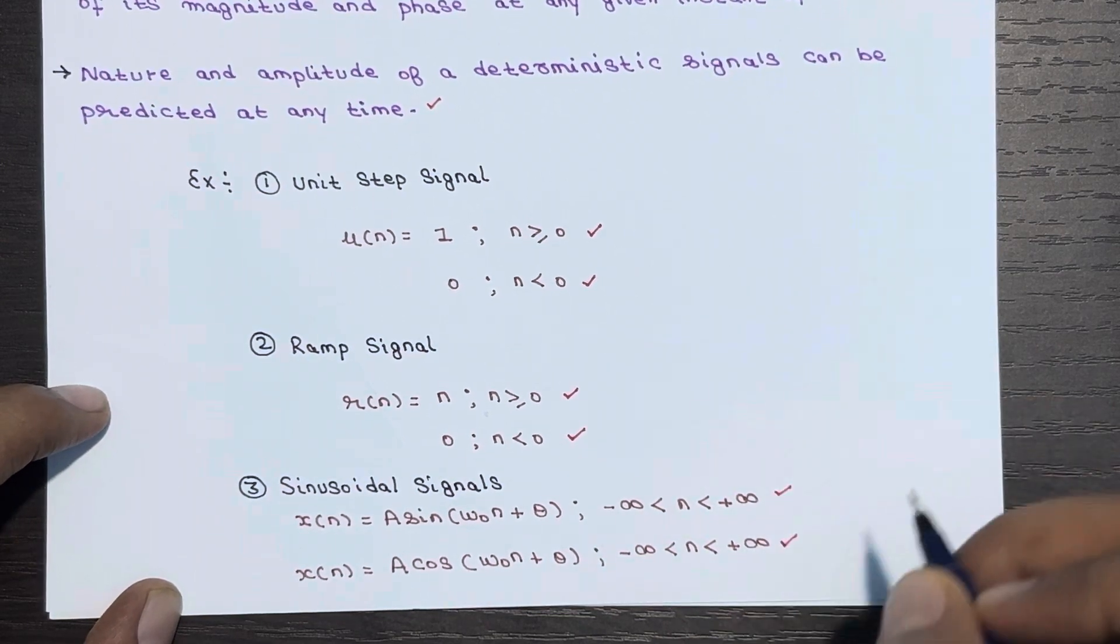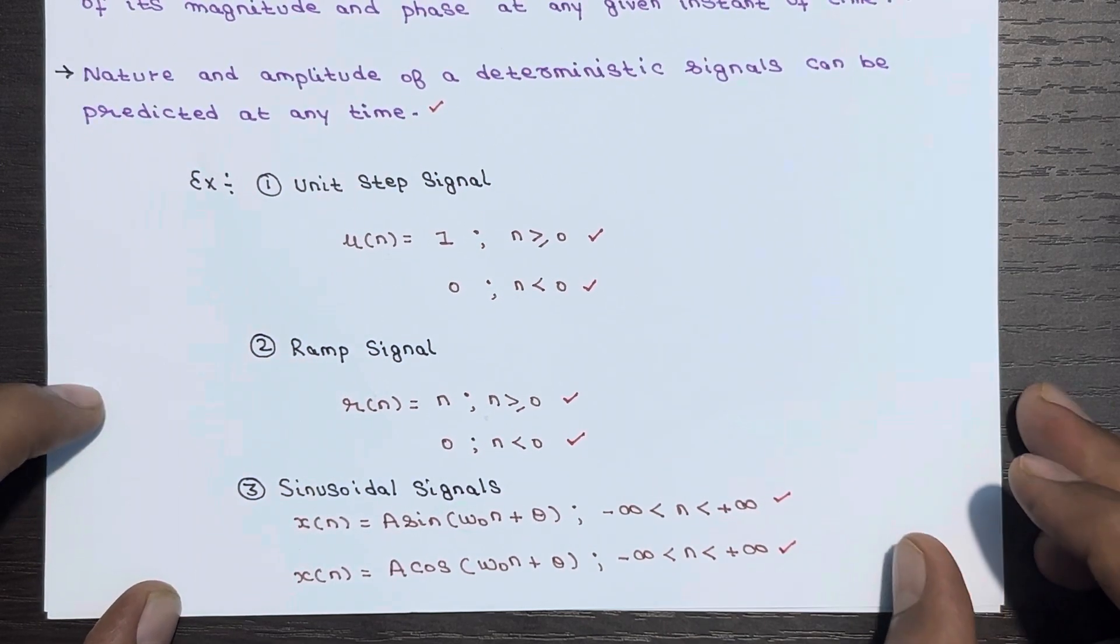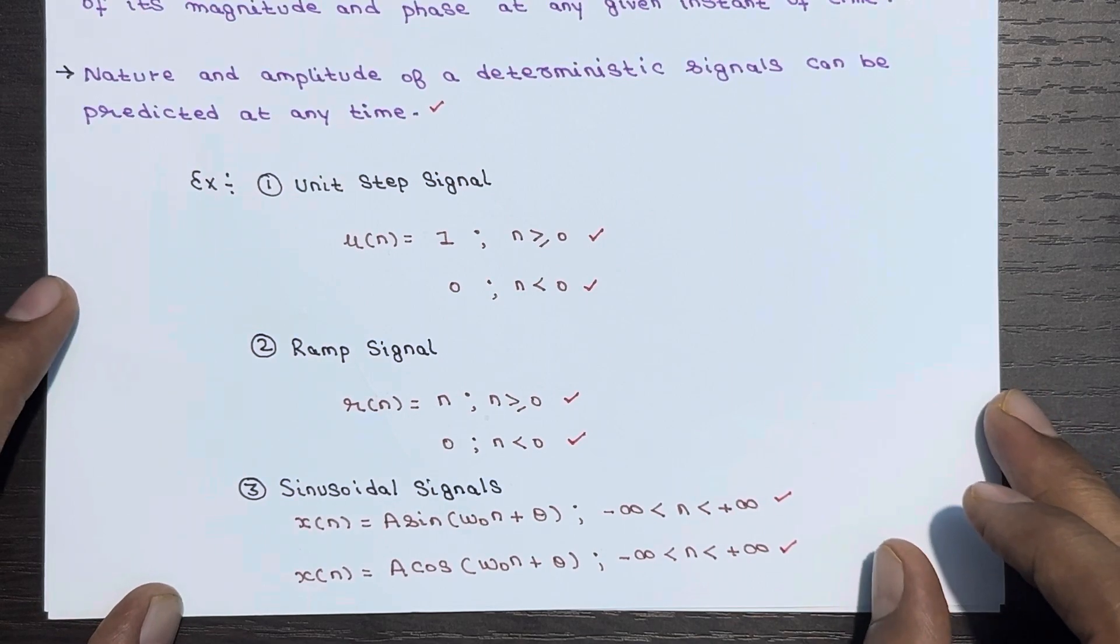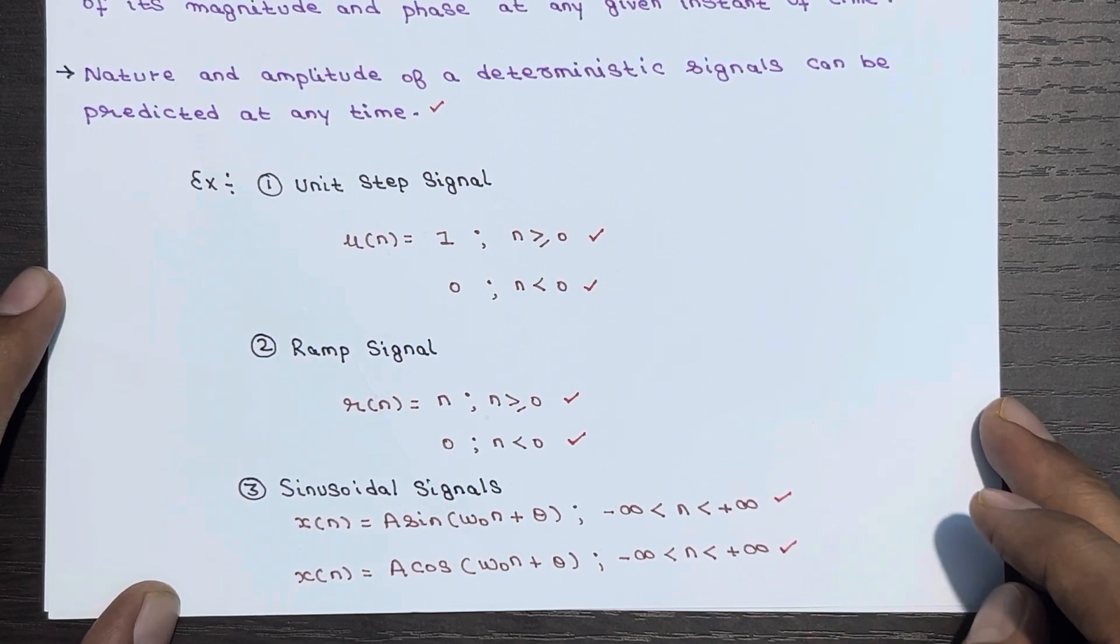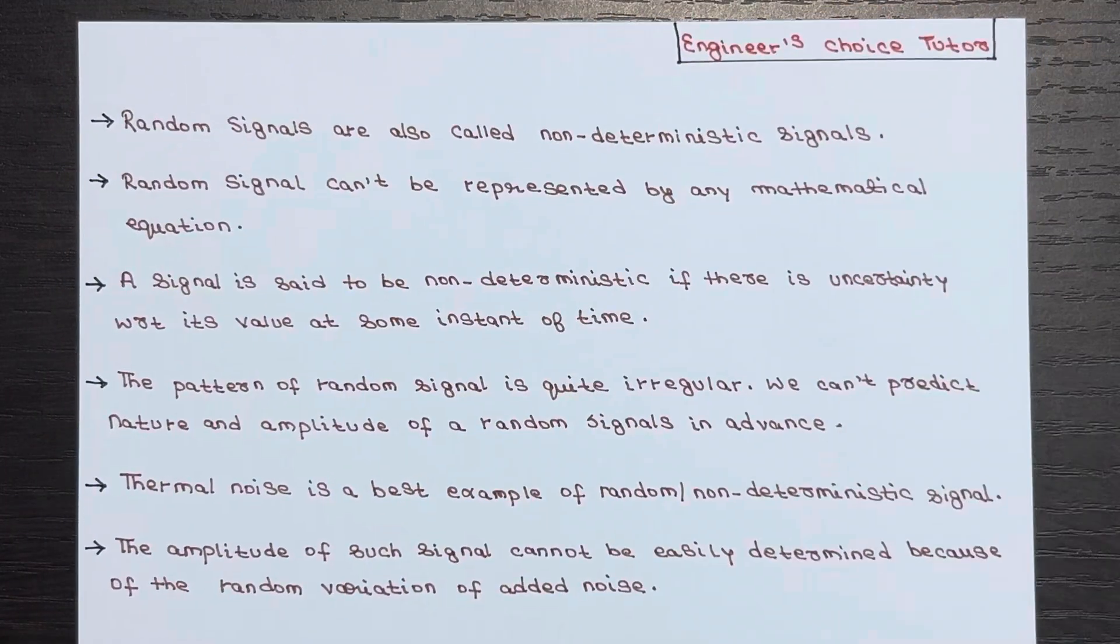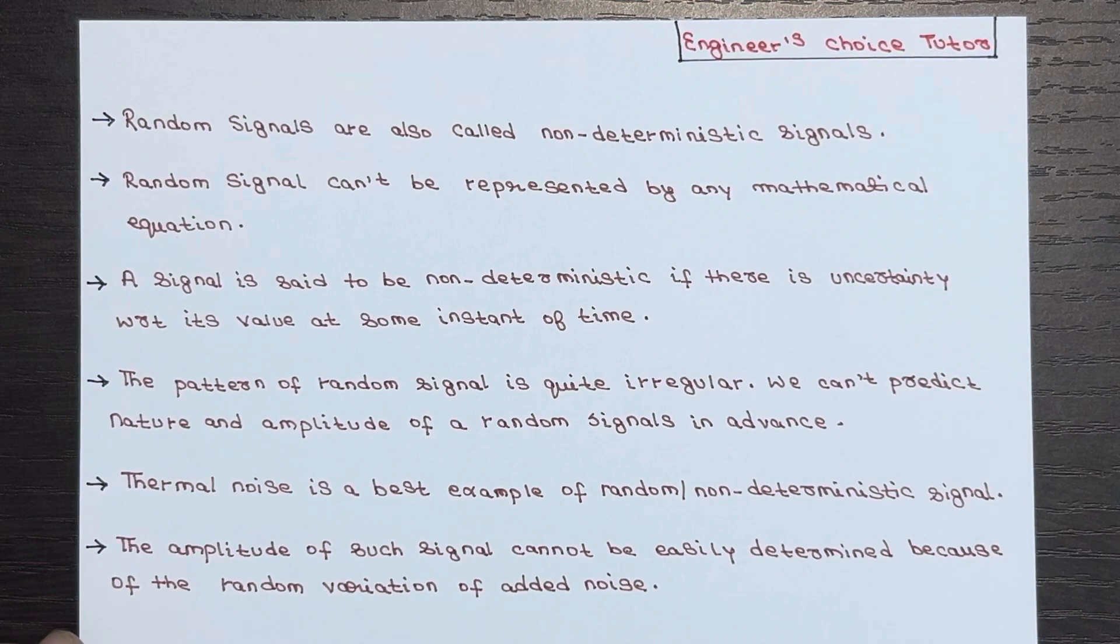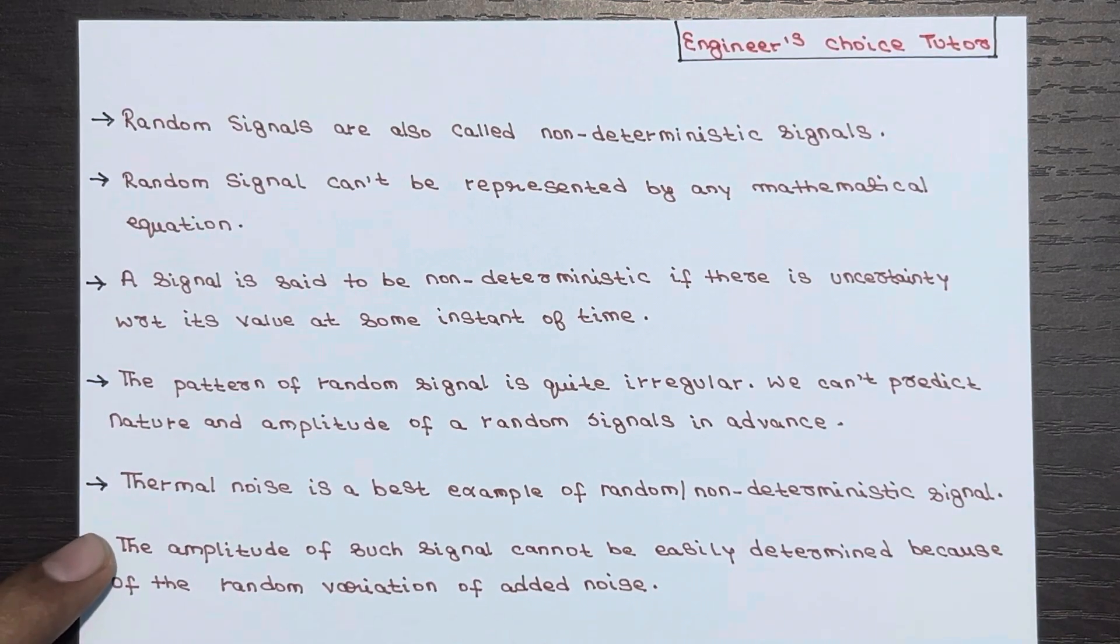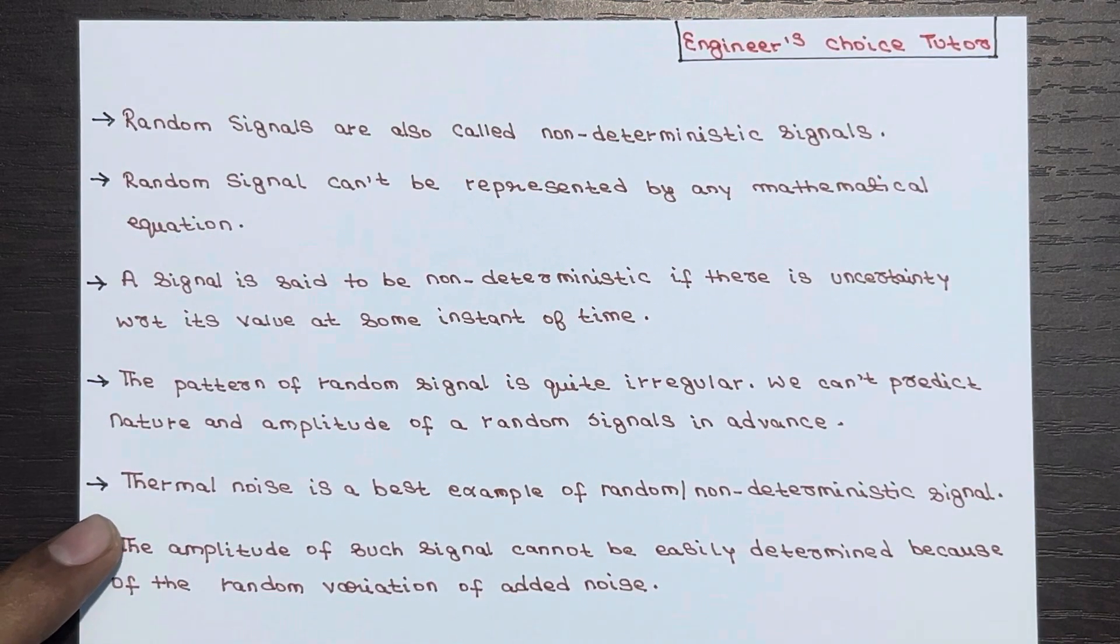These are the examples of deterministic signals. Let's move on to random signals. Random signals also known as non-deterministic signals cannot be represented by any mathematical equation.